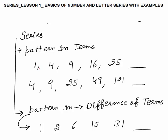Consider the series 1, 4, 9, 16, 25 — find the next number. We observe the pattern: 1 is 1 square, 4 is 2 square, 9 is 3 square, 16 is 4 square, 25 is 5 square. The pattern is squaring consecutive natural numbers. So the next number would be 6 square, which is 36. That is our final answer.